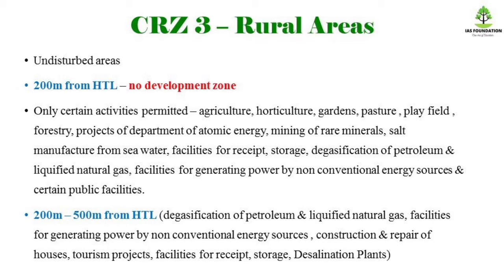There are still exemptions — for example, Agriculture, Horticulture, Gardens, and Atomic Energy Department projects. You can do rare minerals extraction and other activities. There are limits of only 200 meters or 500 meters, and in some cases 300 meters. You can do gasification of petroleum and natural gas, use power generators, do construction and repair activities, tourism projects, and desalination plants.